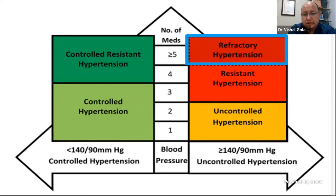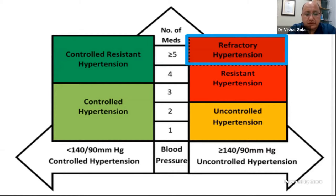The topic for today is moxonidine, which is not one of the first-line medicines. It usually comes into play once we land up with a patient who has either resistant or refractory hypertension, and we discuss how we choose these medicines and where moxonidine stands. I'll try to make it as succinct as possible so that we can take home a few important messages.